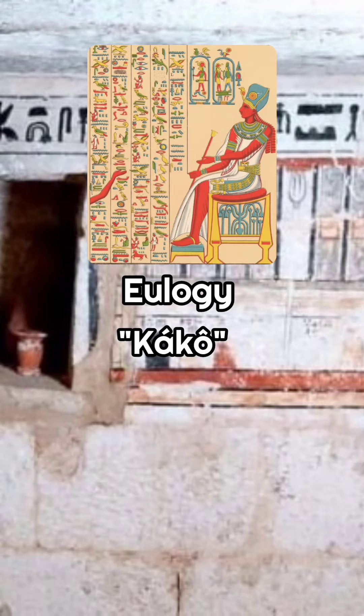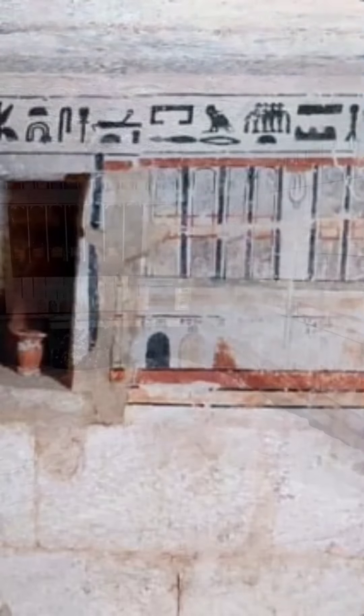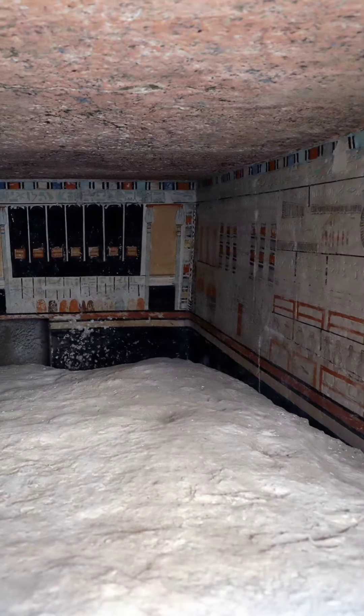They wanted to know more about the person and the person's life — which, where, when the person died, why and how, and what actually killed the person. They have all this particular information in the Book of the Dead, the walls of the tomb, the floor, the tomb walls, the tomb floor, and the eulogy.